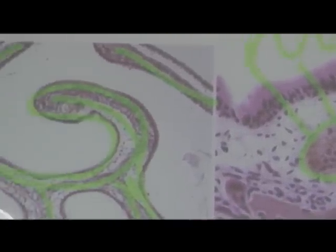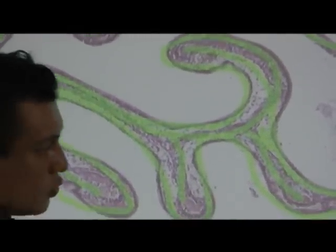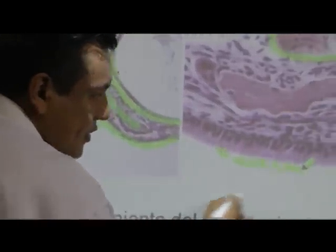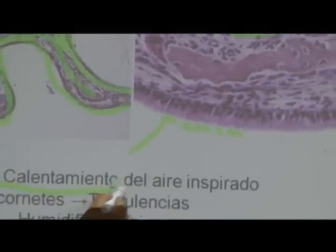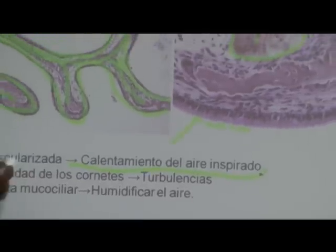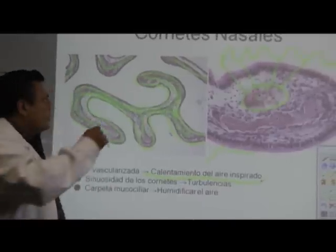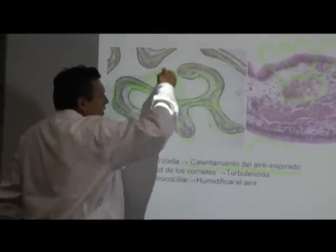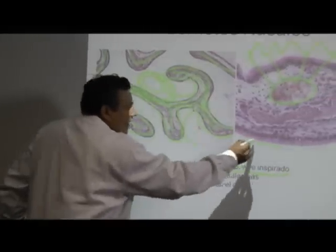Si se dan cuenta, existe una línea celular de células epiteliales cúbicas ciliadas. Estos cilios sirven para que se impacten las partículas y, gracias al movimiento hacia el exterior, expulsen todas esas partículas potencialmente patógenas. Haciendo un resumen: esa amplia vascularización de las cornetes nasales ayuda al calentamiento del aire inspirado. La sinuosidad de esos cornetes crea turbulencias aéreas y, al crear turbulencias, fomenta la impactación de partículas a la carpeta mucociliar.